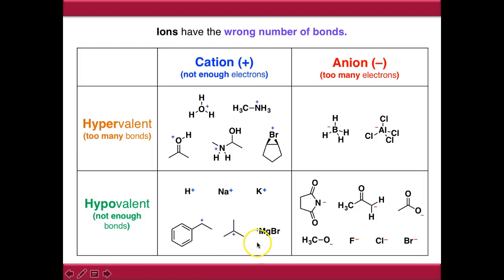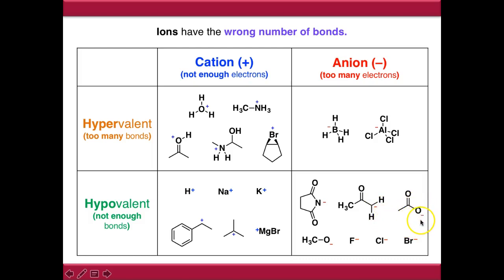If we move across to the hypovalent anions, we're looking at things where nitrogen is making two bonds, carbon is making three bonds but this time it has gained some electrons as opposed to giving them away. Oxygen is making one bond and has taken a pair of electrons. And all of the halides - fluoride, chloride, bromide - and any alkoxides as well. These are all examples of hypovalent anions.